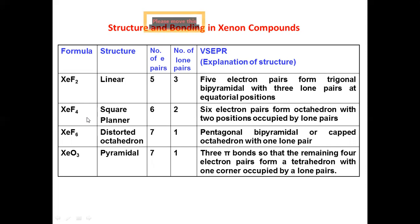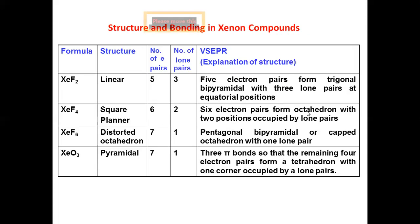Xenon tetrafluoride has a square planar structure. The number of bonding pairs is 4 and the number of lone pairs is 2. According to VSEPR, six electron pairs form an octahedron with two positions occupied by lone pairs, giving the square planar geometry.